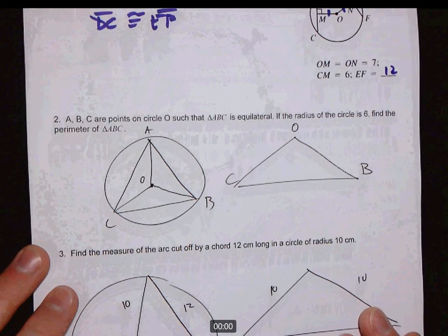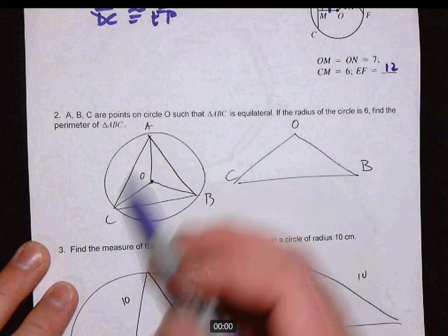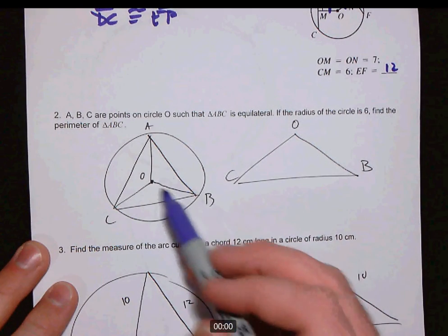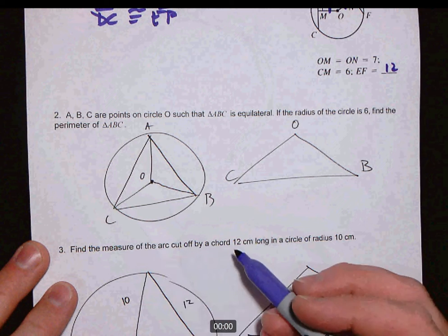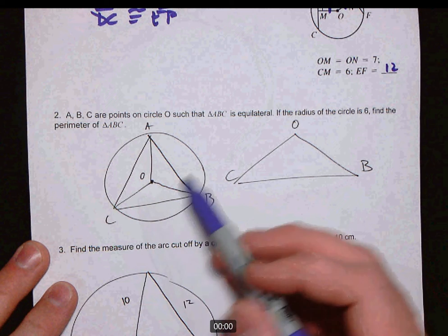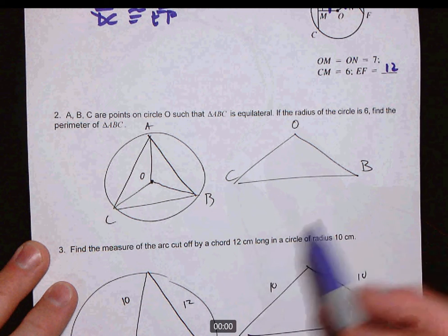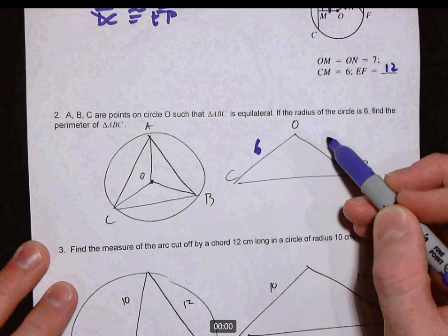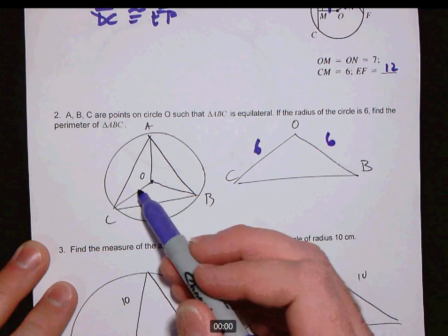With number two, the key was really to get this good picture, the equilateral triangle, and then to draw the radii from O to the vertices. Now, to hold one of these triangles out, like OCB, this is an isosceles triangle, because these are both radii.